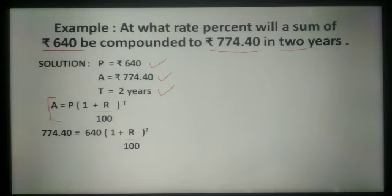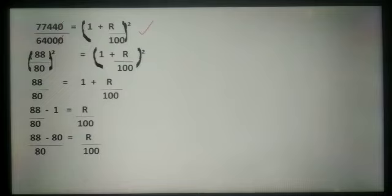So, A is equal to P into 1 plus R upon 100 raised to the power t. We have to put the values. Amount 774.40 is equal to P 640 into 1 plus R upon 100 raised to the power 2. On solving this, we are getting 77,440 divided by 64,000 is equal to 1 plus R upon 100 raised to the power 2. Here we can write this as 88 upon 80 whole squared is equal to 1 plus R upon 100 raised to the power 2. Here, exponents are equal, so we can equate the bases.